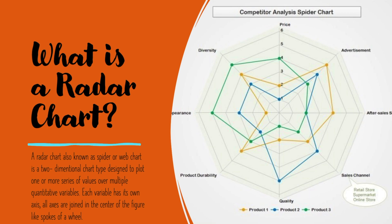As you can see in this particular spider chart, it is most commonly used in competitive analysis. This chart is created to represent different parameters like price, advertisement, durability, after sales services and so on. There are three different products which are compared based on the values of these variables, and each of these variables are connected by these spokes to the center of this chart.